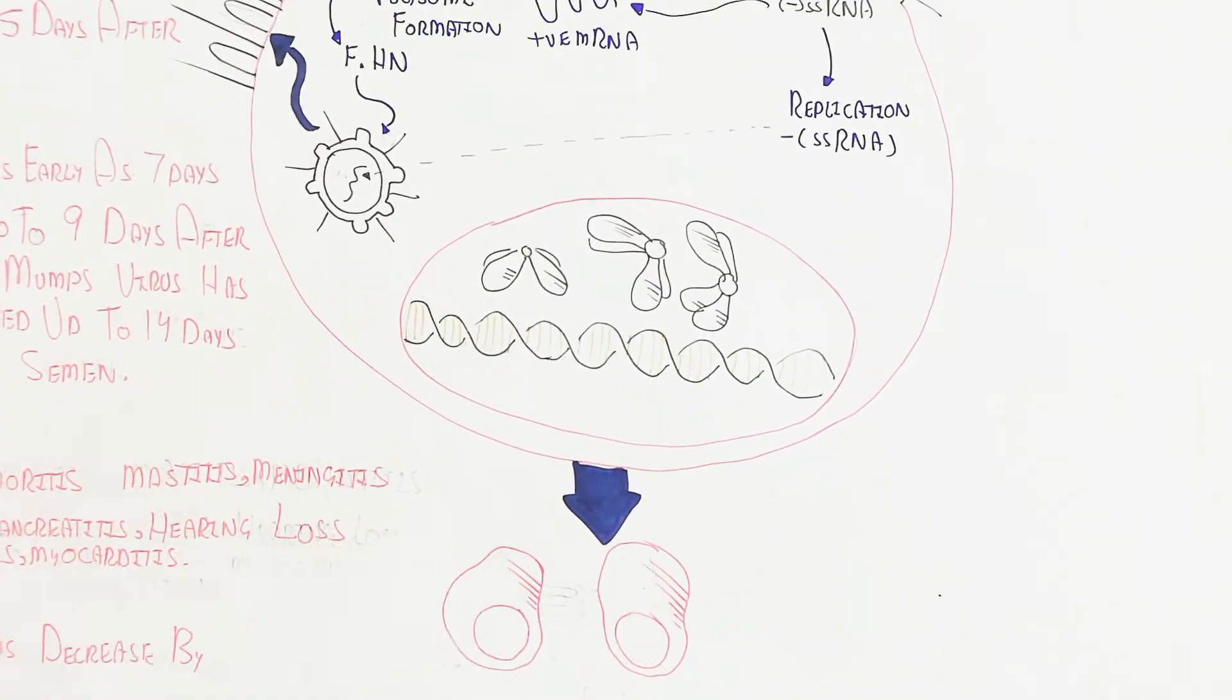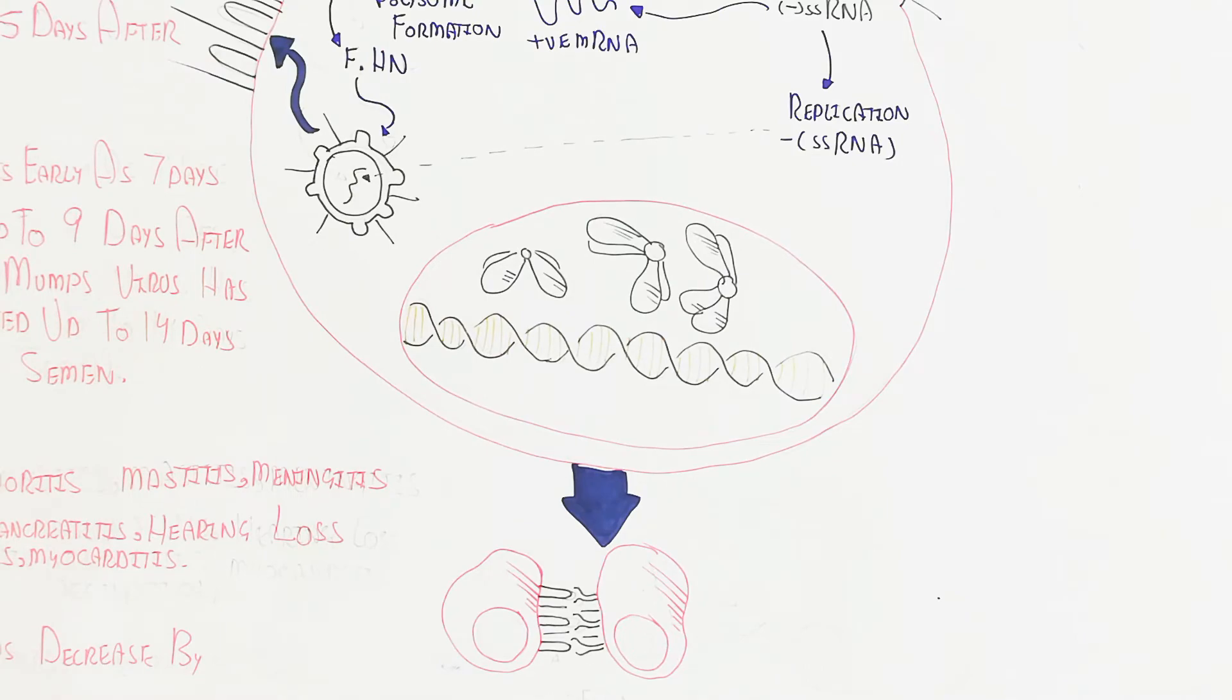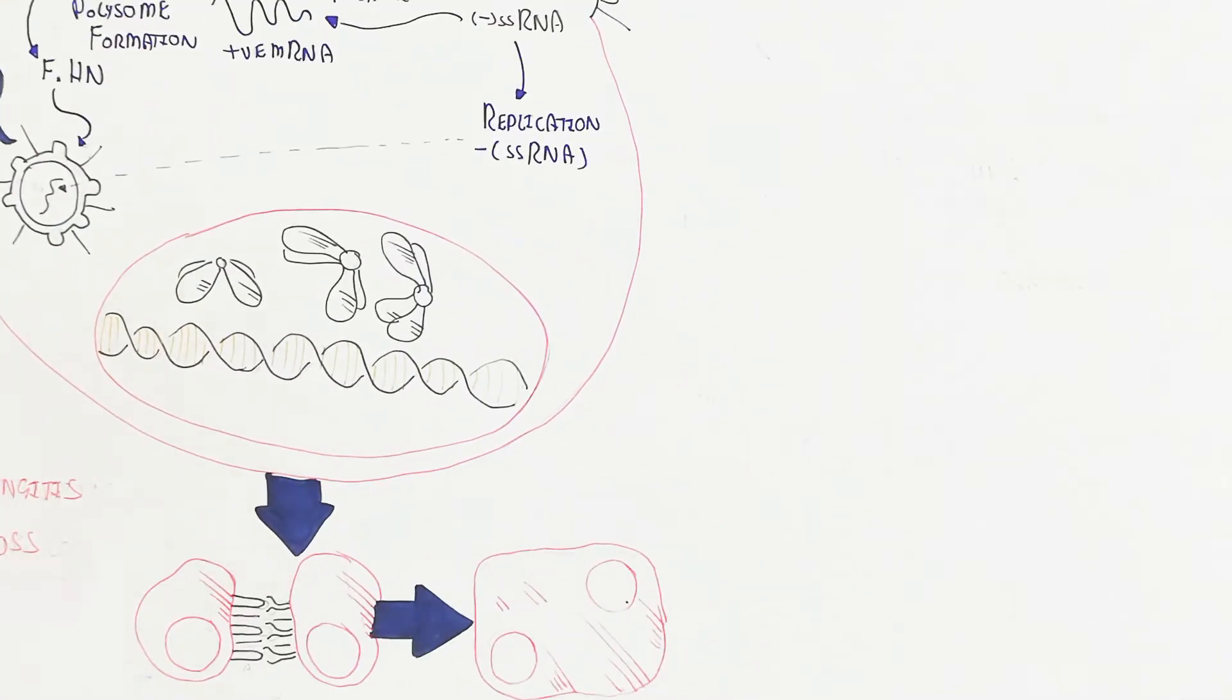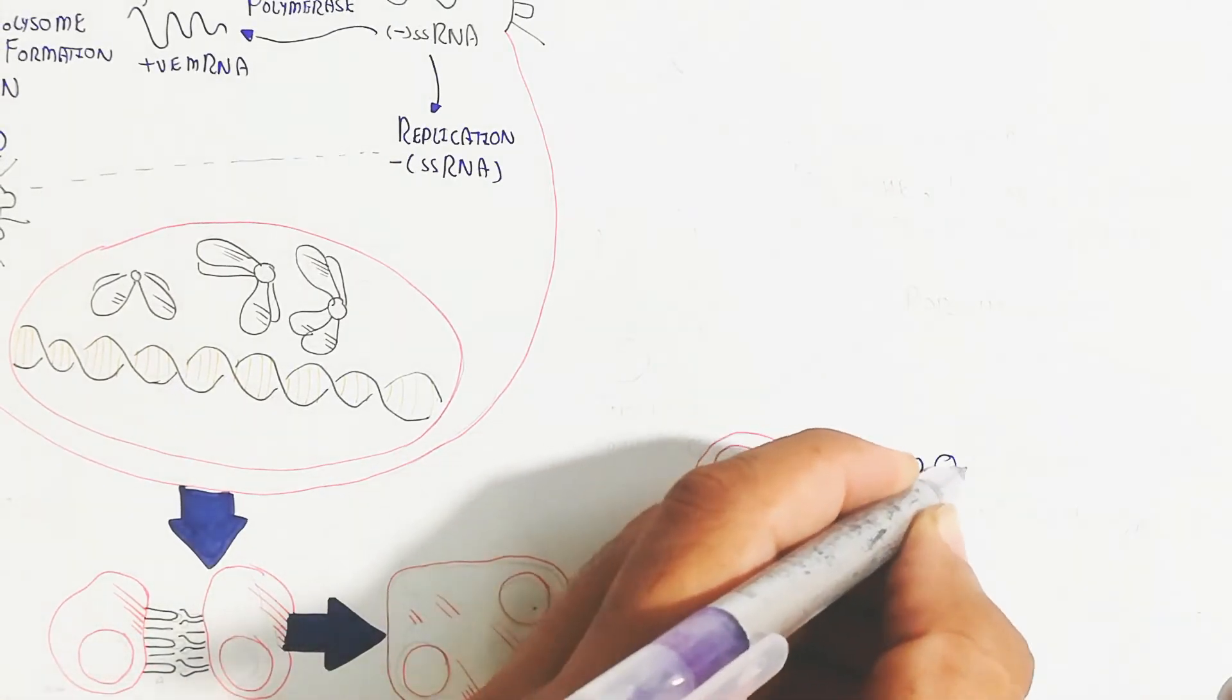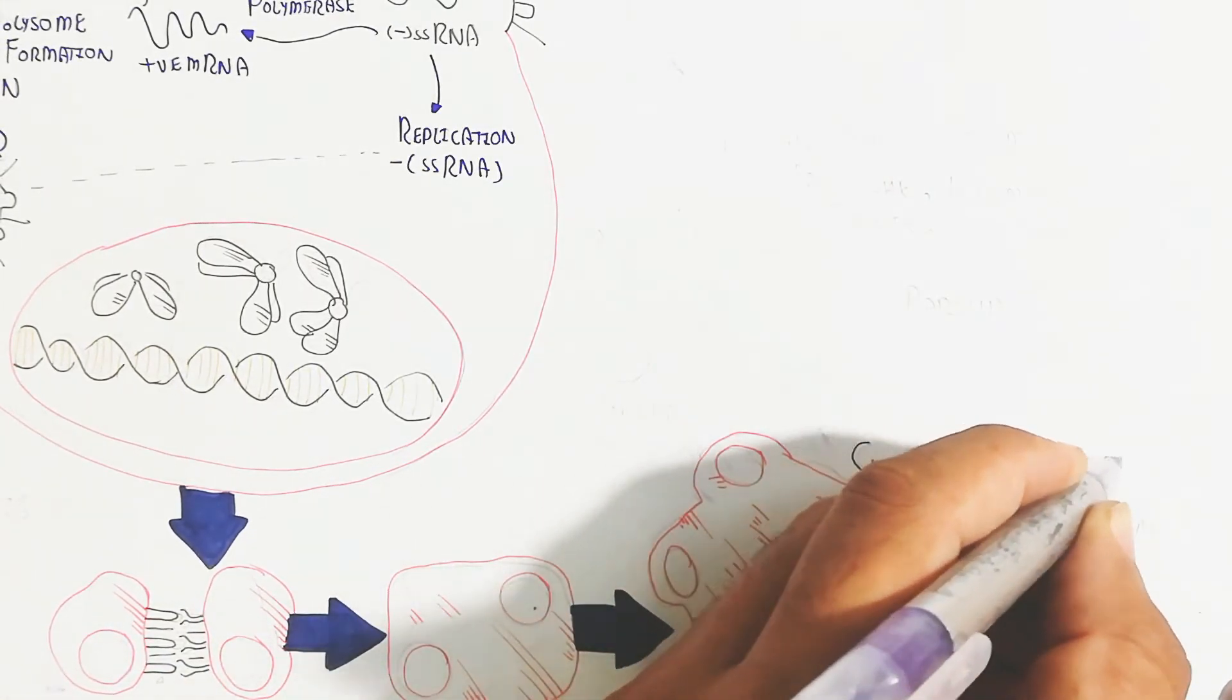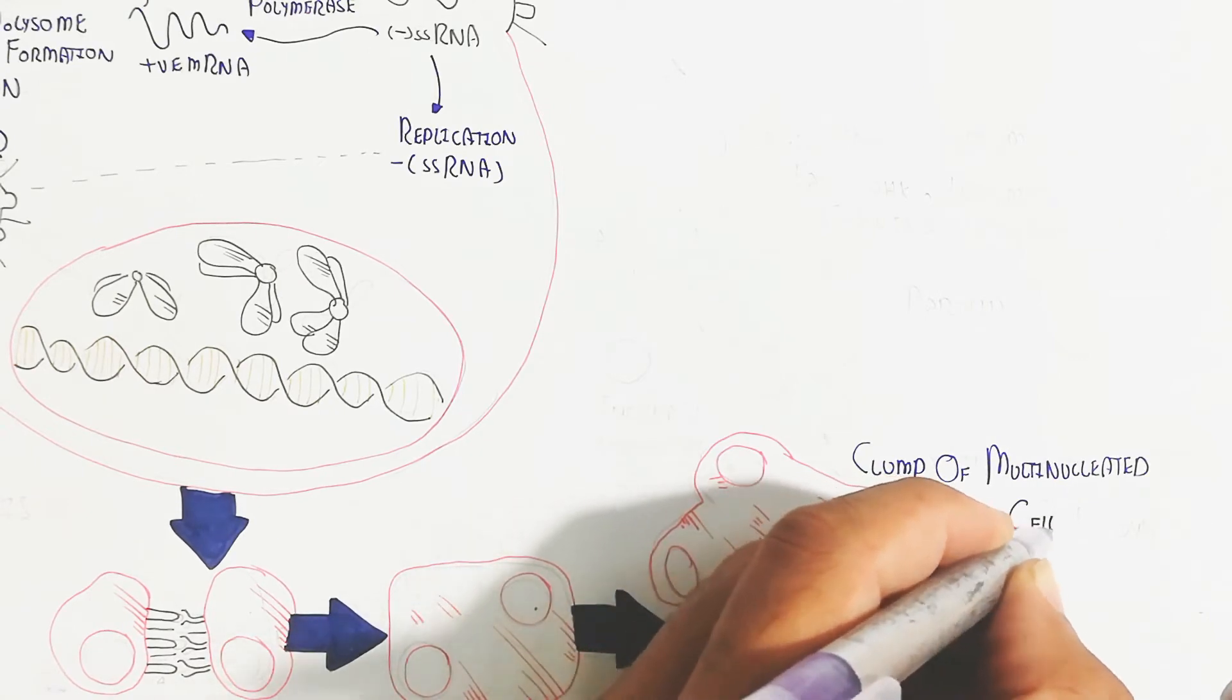This binding with the plasma membrane of the host cell will lead to fusion. The neighboring cell will lead to clump formation. This fusion will lead to multi-nucleated clumps of multi-nucleated joint cells.